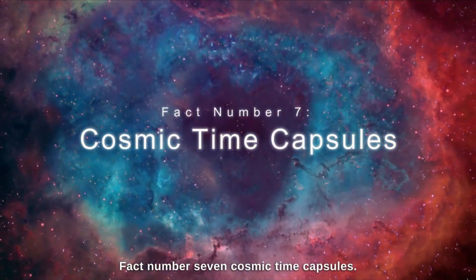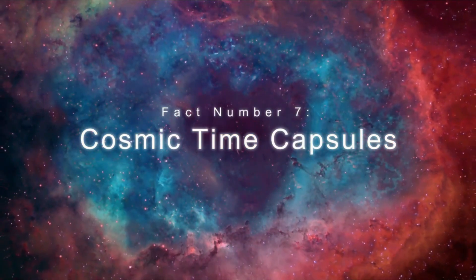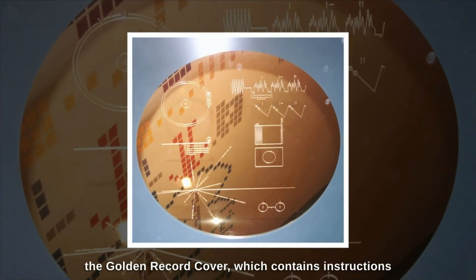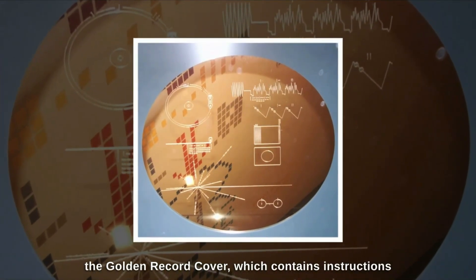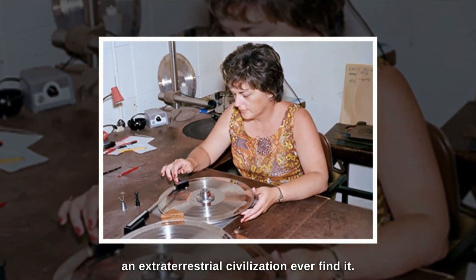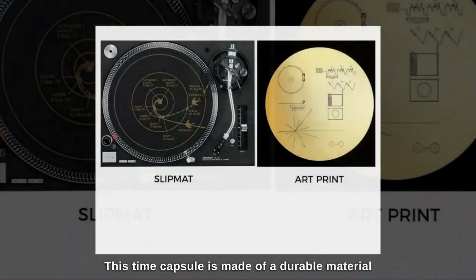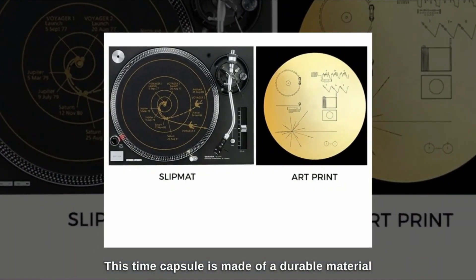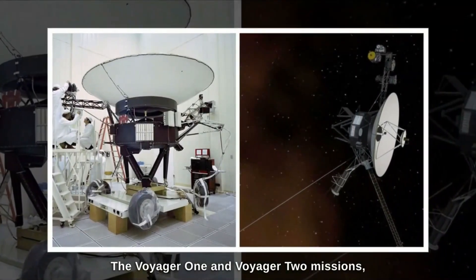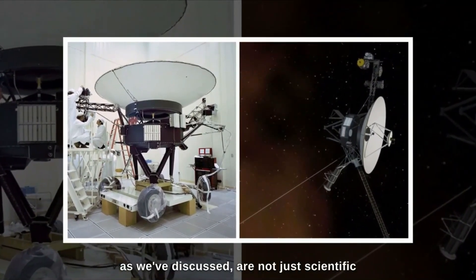Fact number 7. Cosmic Time Capsules. Both Voyagers carry a time capsule called the Golden Record Cover, which contains instructions on how to play the record, should an extraterrestrial civilization ever find it. This time capsule is made of a durable material, designed to withstand the harsh conditions of space.